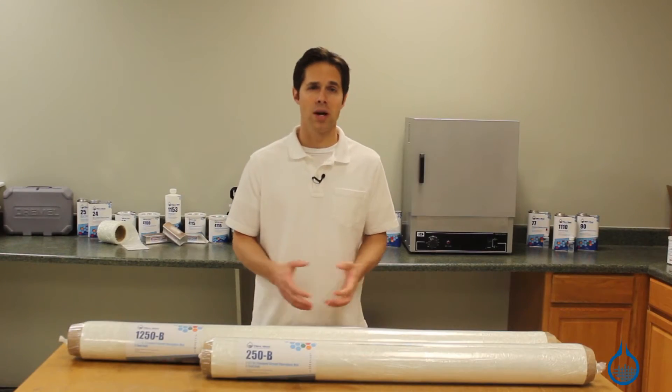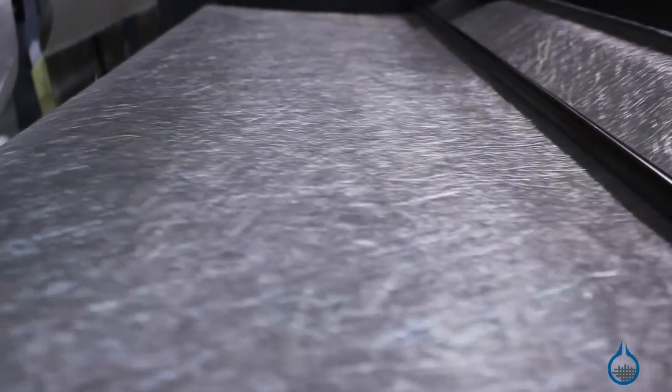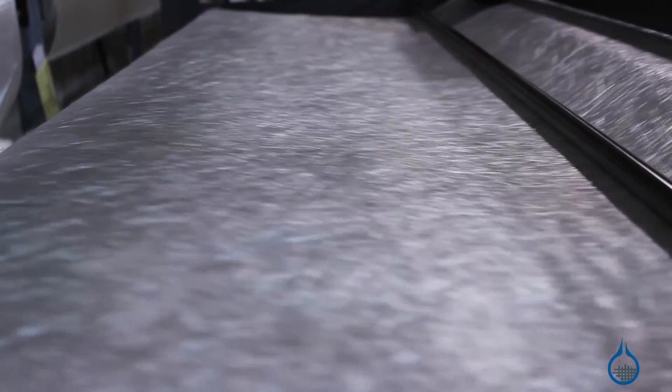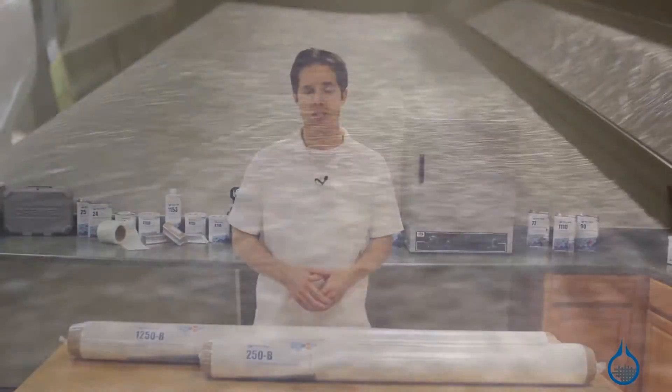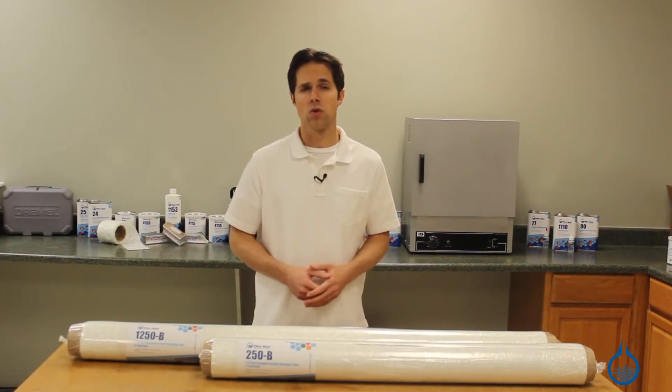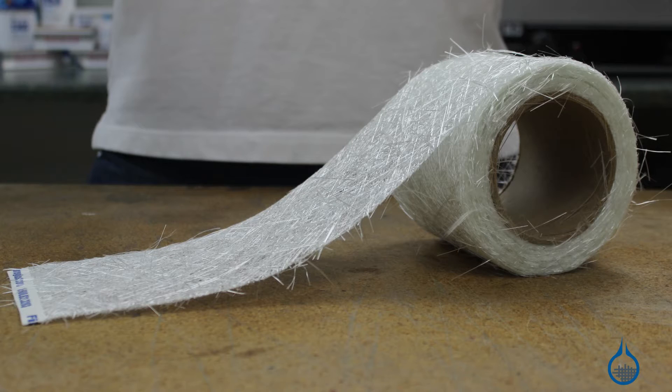Fiberglass offers Chopped Strand Mat in both 38 inch and 50 inch wide formats, our numbers 250 and 1250 respectively. For convenience, it's also sold as a 4 inch wide tape, our number 492.